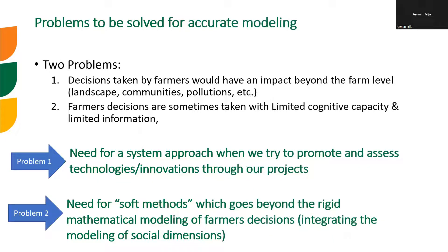From there came two problems. Decisions taken by farmers have an impact beyond the farm level — landscape, communities, pollution, externalities. But also, farmers' decisions are sometimes taken with limited cognitive capacity and limited information. Farmers might be very rational in terms of economic decisions, but they may lack information and good calculations when it comes to long-term profit, soil fertility loss, and things like that. So how can we consider all of these shortcomings into a more comprehensive modeling framework?